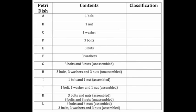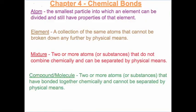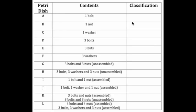Here's a data table where we can record our information. In bag A, you can see that there is one bolt. This best represents an atom — the smallest particle into which an element can be divided and still have properties of that element. So on our data table, under A, one bolt, we write atom.